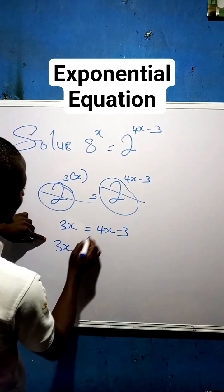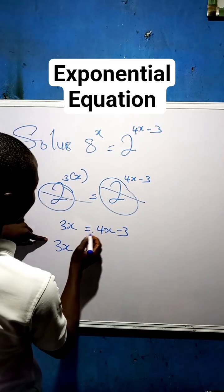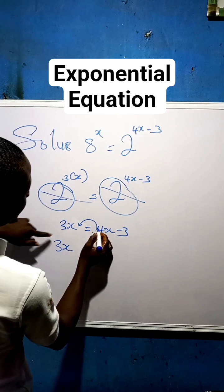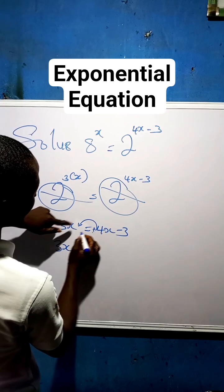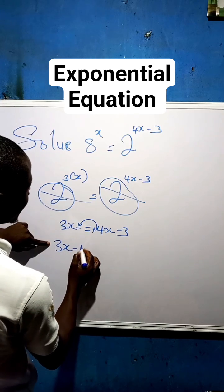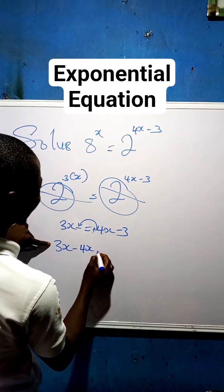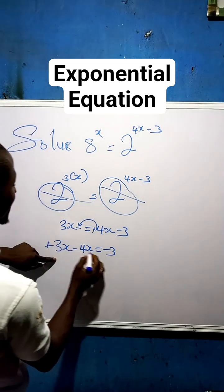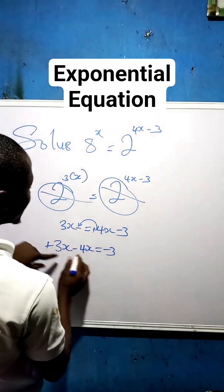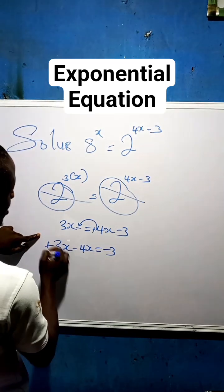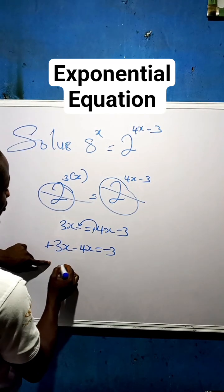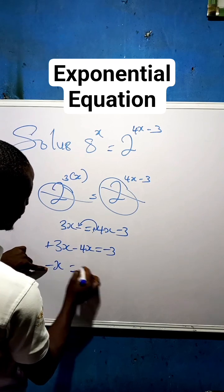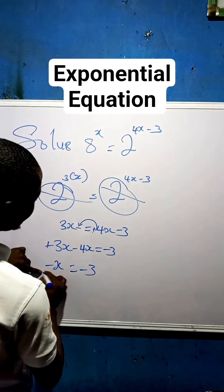Now we collect like terms — we bring 3x to meet 4x. When we move 4x across, the sign changes from plus to minus, so we have 3x minus 4x equal to minus 3. That gives us minus x equal to minus 3.